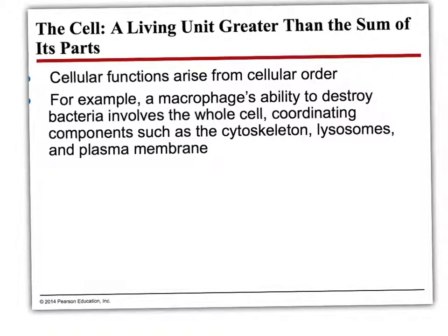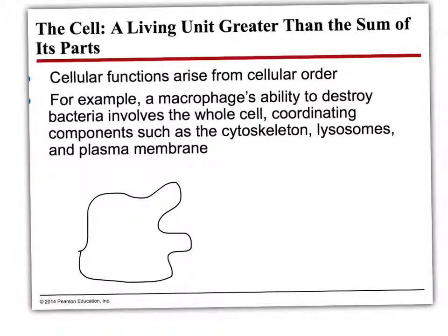So the cell in total: cellular functions arise from a certain order — nucleus, DNA to RNA to protein, ER, ribosome, Golgi, out of the cell. We'll get into the plasma membrane in depth in Chapter 5. For example, a macrophage — macrophages are found throughout your body and, depending on where they are, become different cells: a macrophage in the bone becomes an osteoclast, a macrophage in the brain becomes a microglia. They digest cellular debris and break things down. In your blood and connective tissue, a macrophage is also a white blood cell.